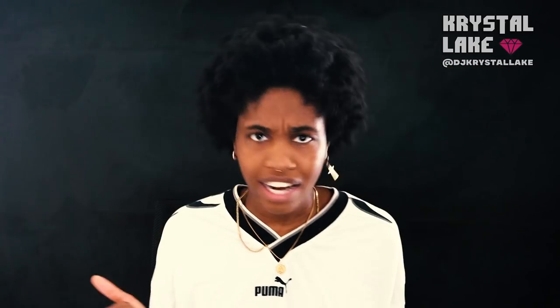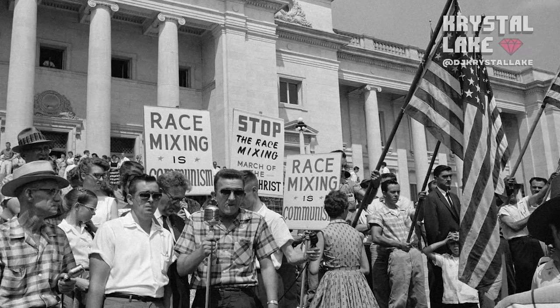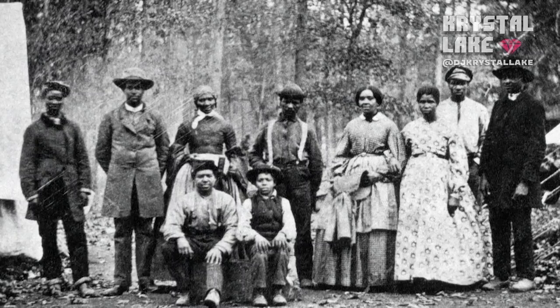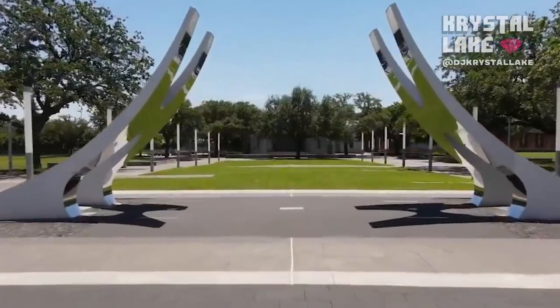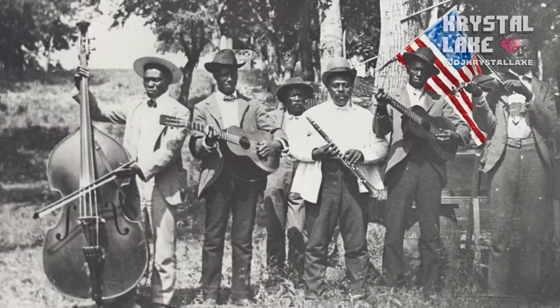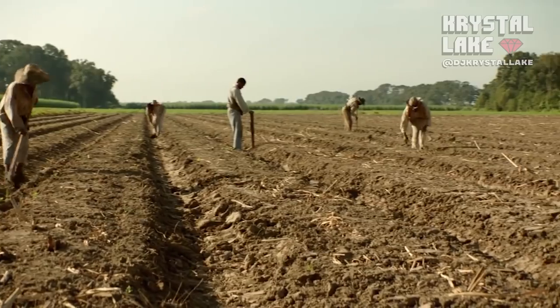Celebrating Juneteenth back then was pretty tricky. The government was intended to be of the white man, by the white man, and for the white man. Segregation laws banning Black people from public spaces made it very hard to celebrate, and the threat of being killed by racist white people was also an issue. Black people needed a safe space. Some celebrated in their garden, church, or home, and Black people also raised money to fund safe spaces like Emancipation Park in Houston, Texas.